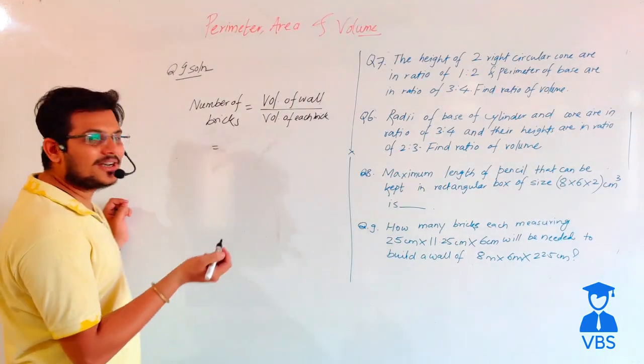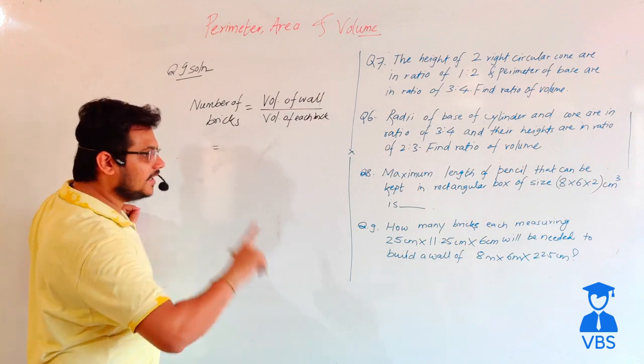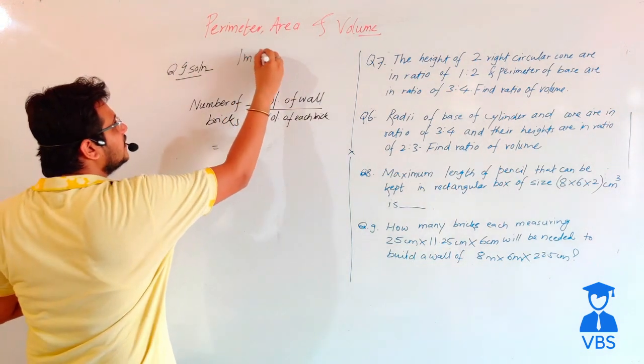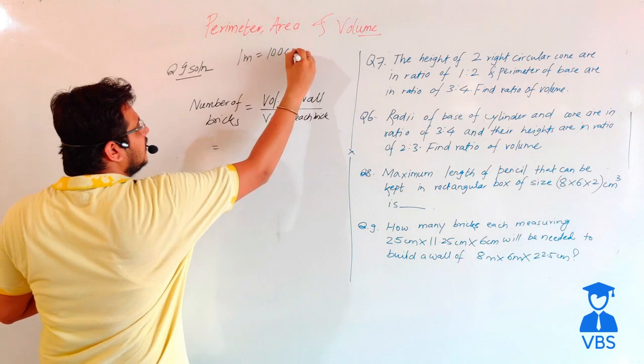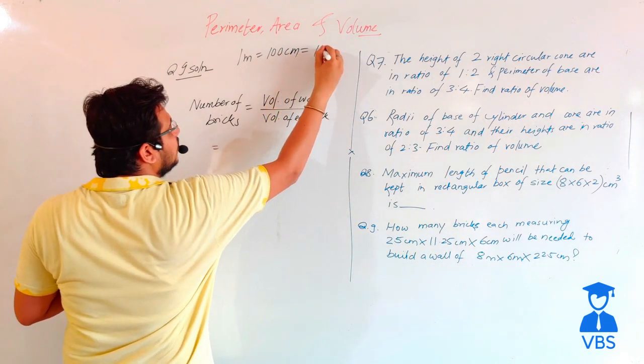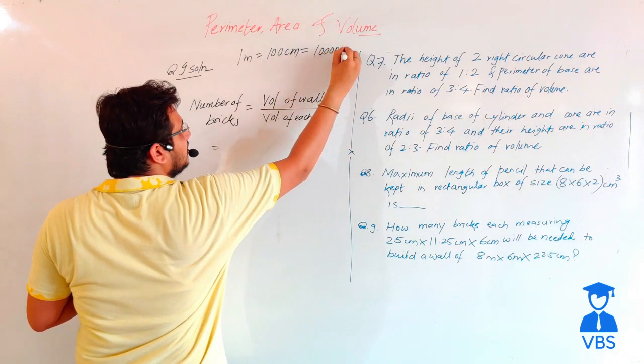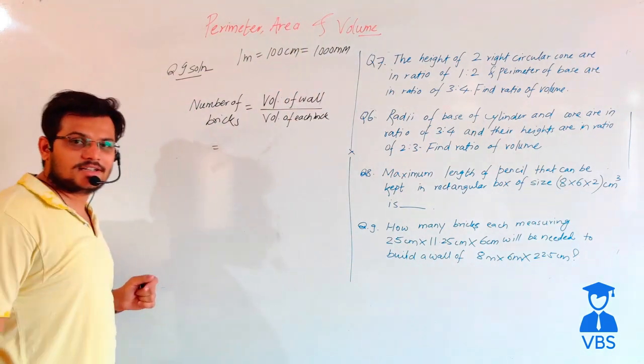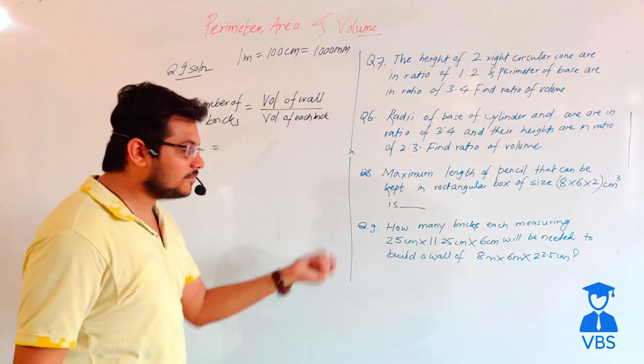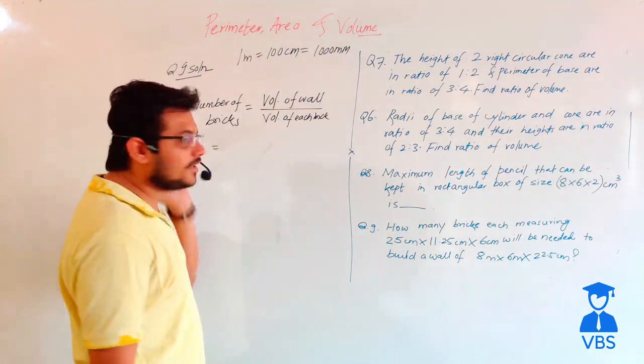How many bricks do? 1 m is equal to 100 cm which is also equal to 1,000 mm. This is a good thing. So if you want to convert it, if you want to convert it, then the answer is correct.